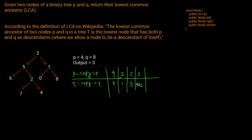Does three equal null? No. So we need to go into the parent. Three will go into its parent, which is null. And obviously we can't go to the parent of a null node. So this is where the trick of the problem is: we need to reset q_copy. But we're not going to set it back to eight — we're going to reset it to P. So we reset it to four. And we continue with our iteration.